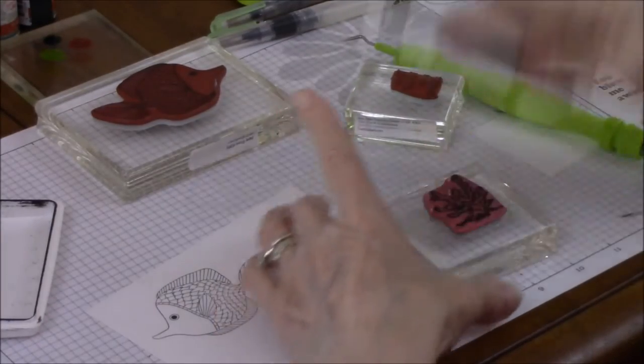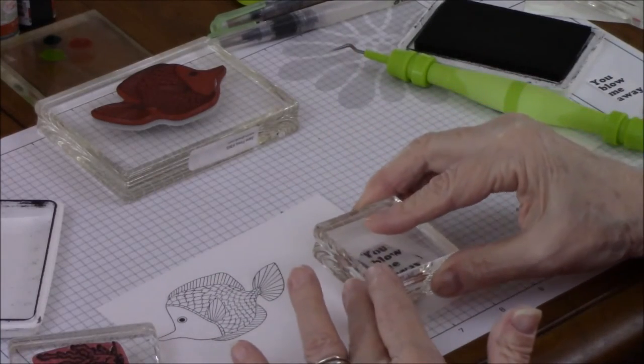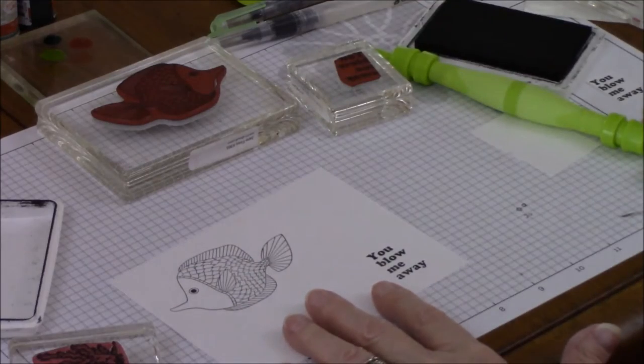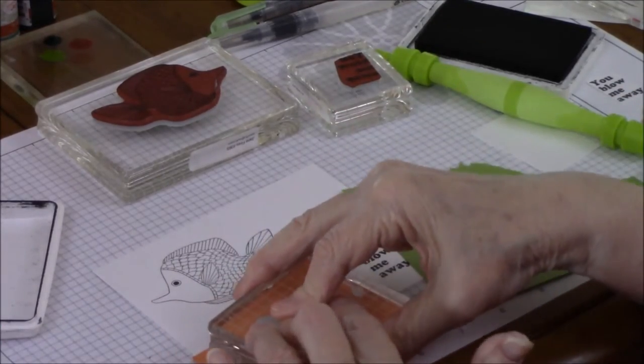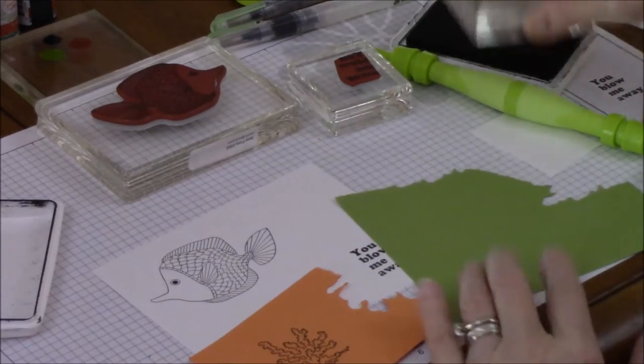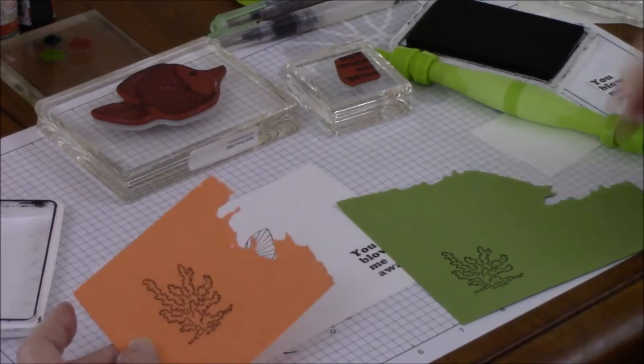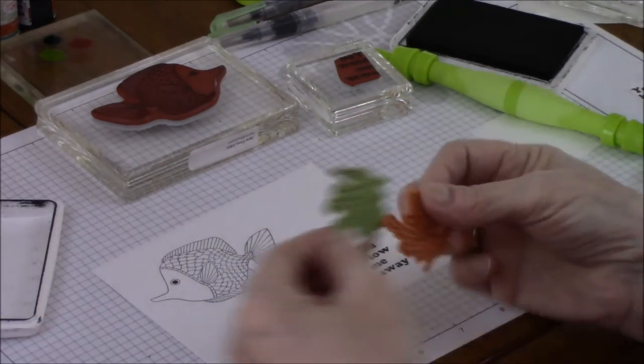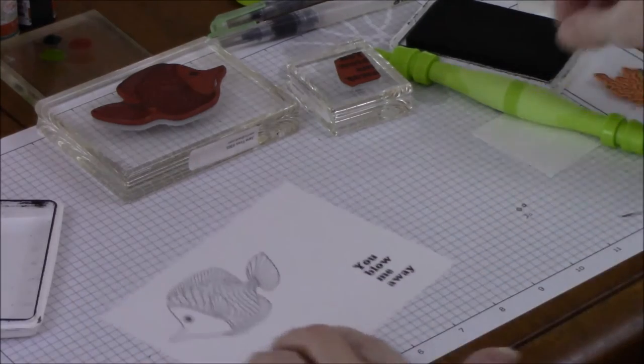And then I inked up my grass, and I inked up my words. And on my white, I put my words, because I'm going to cut those out. And then I used my orange, my cream cycle, and my light green, and I stamp my seagrass. And then with these, I can cut these out using the dies. And when you do, this is what you have.